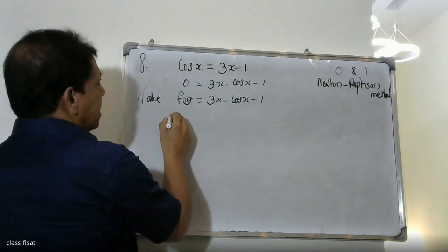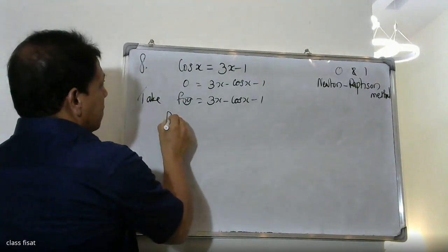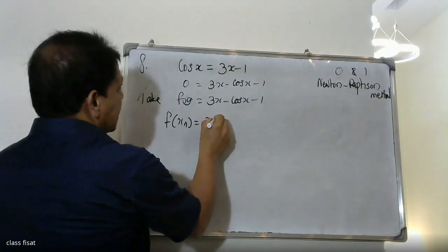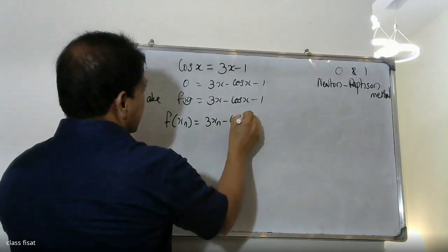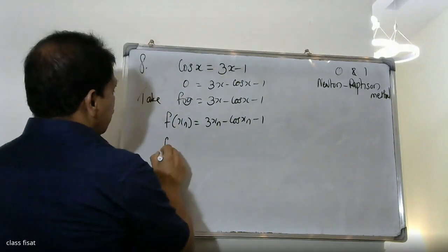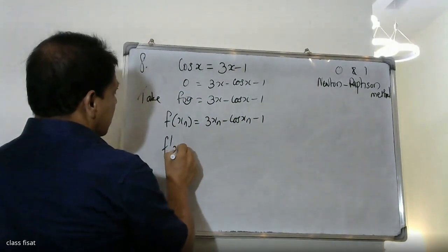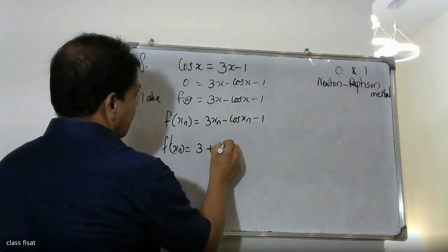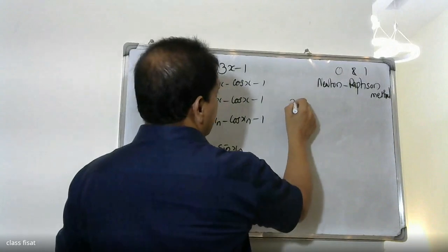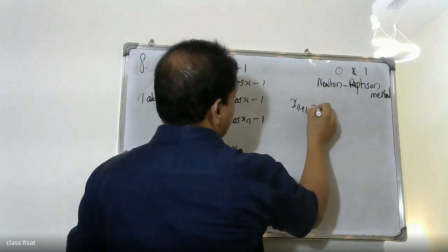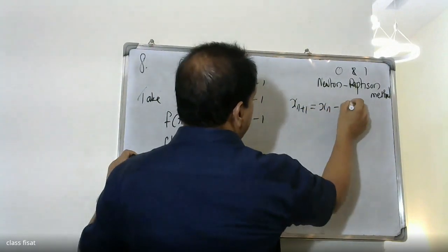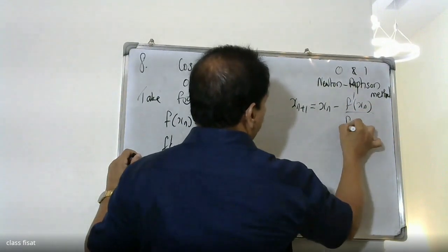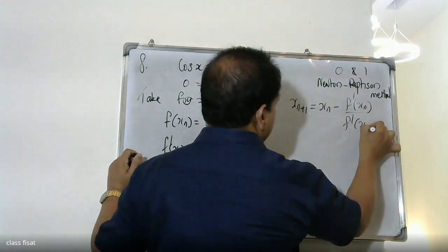f of x equals 3x minus cos x minus 1. The derivative f dash x equals 3 plus sin x. The Newton-Raphson iteration formula is: x n plus 1 equals x n minus f of x n divided by f dash x n.